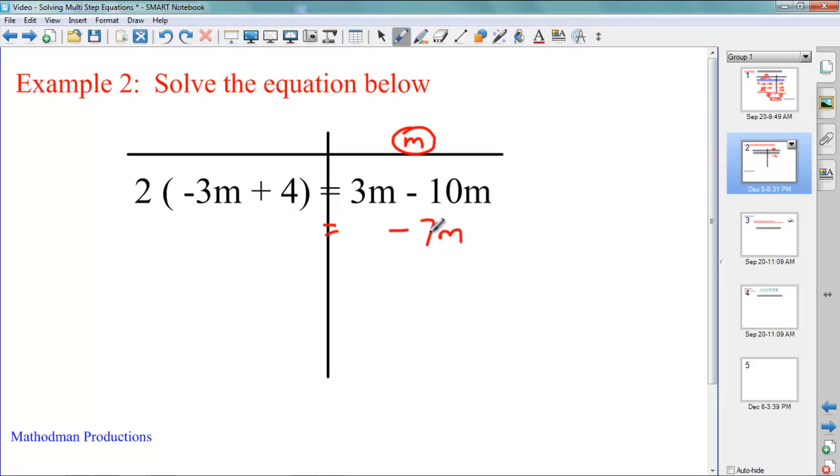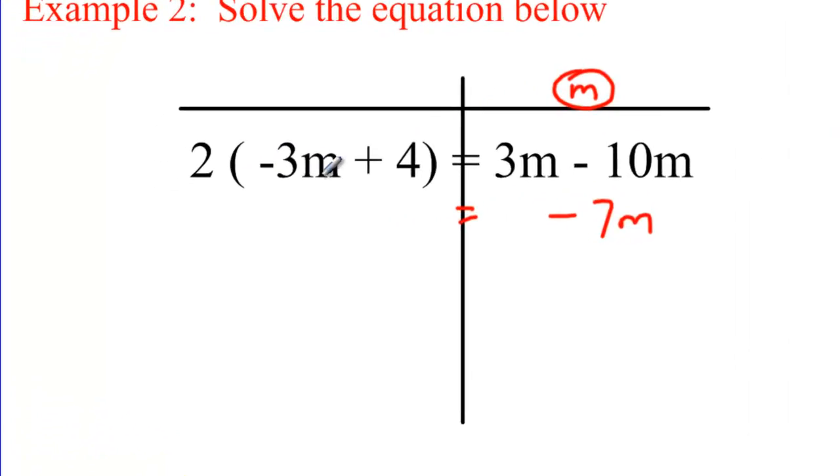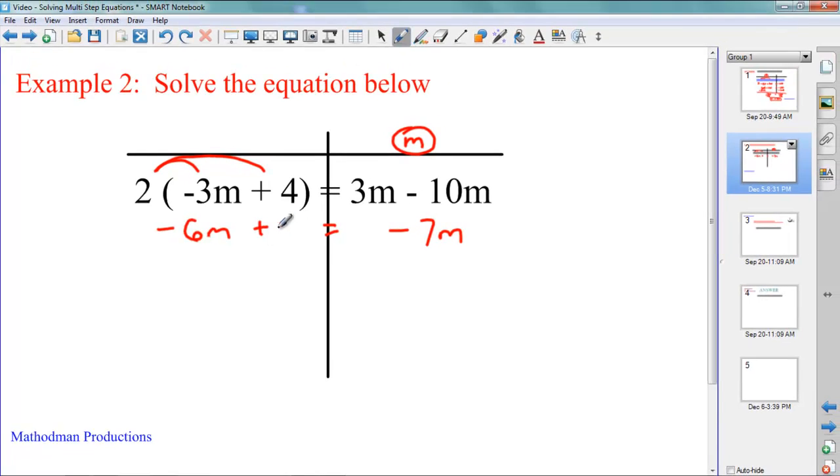I can't do anything else with that so I'm going to look on the left side. 2 next to a set of parentheses. Distributive property. Distribute the 2. 2 times negative 3M is negative 6M. 2 times 4 is a positive 8.